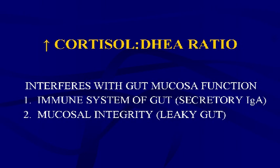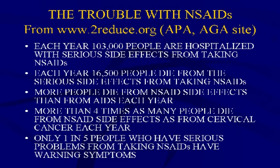The adverse effects of NSAIDs include GI hemorrhage and leaky gut. The increased cortisol-DHEA ratio also interferes with gut mucosal function, compromising the immune system, reducing secretory IgA, and impairing mucosal integrity. From reducedotorg: each year 105,000 people are hospitalized with serious NSAID side effects, and 16,500 people die — more than from AIDS in the US, and more than four times as many as from cervical cancer.